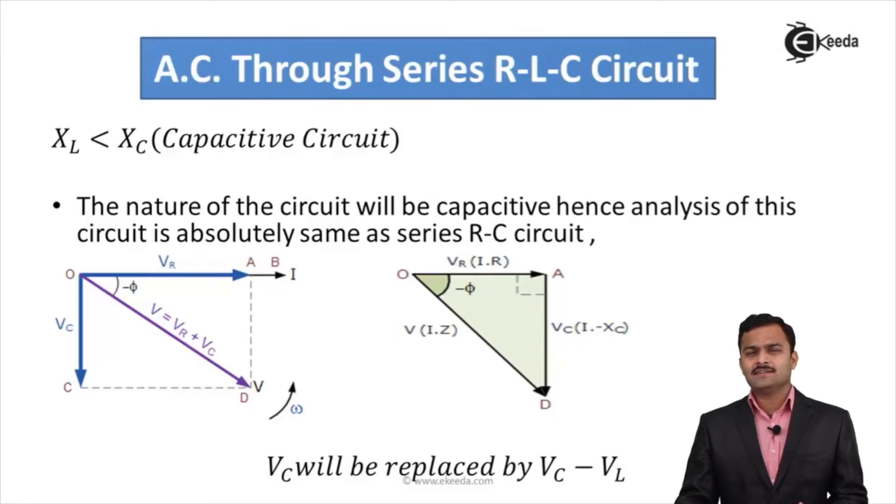Whatever discussion we have done for phasor diagram, voltage triangle or impedance triangle, power triangle will be identical to that of capacitive circuit, that is series RC circuit. Only thing is that Vc should be replaced by Vc minus Vl. I have shown over here a phasor diagram and voltage triangle that are identical to RC circuit because here circuit will be capacitive in nature.